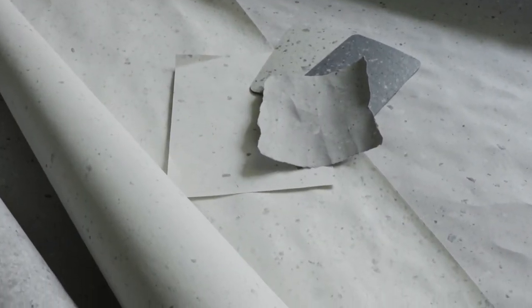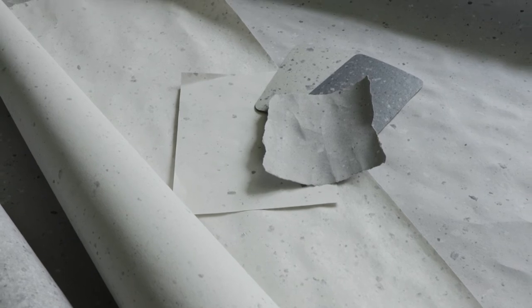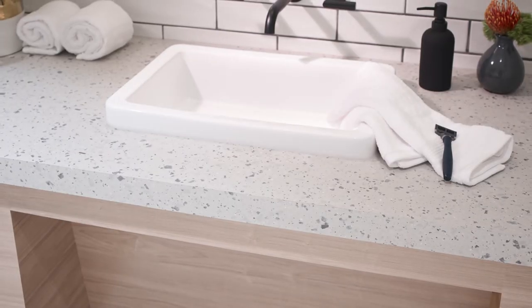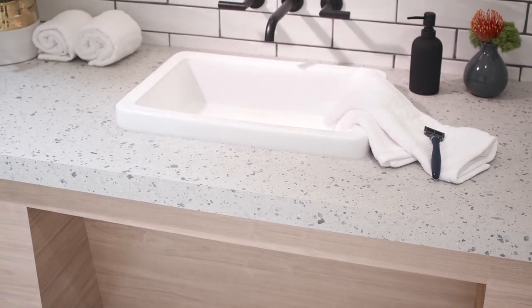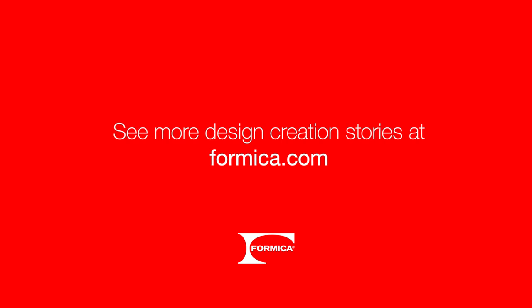Winner of Best of the Year in the Green Innovation category from Interior Design Magazine, Paper Terrazzo Laminate by Formica Group enhances any surface with its eye-catching design and upcycled origins. See more design creation stories at Formica.com